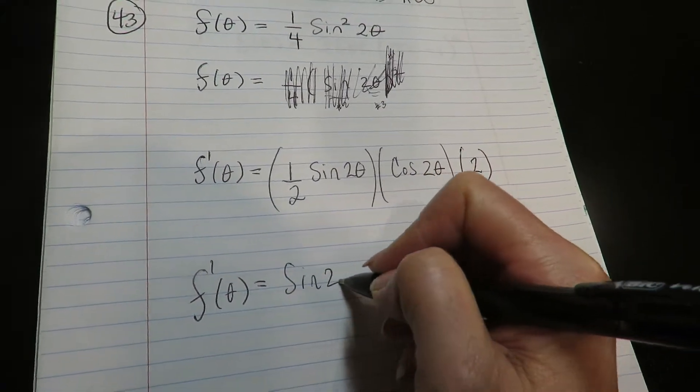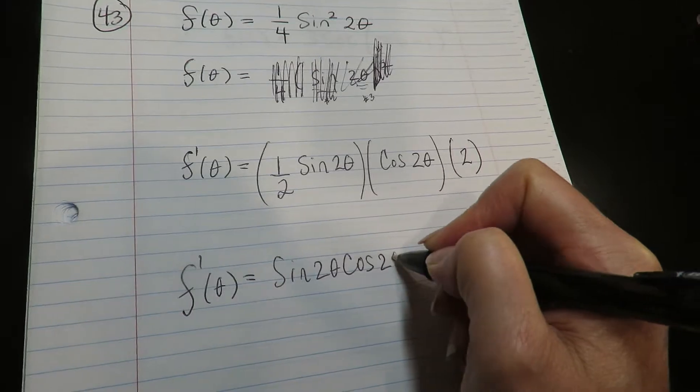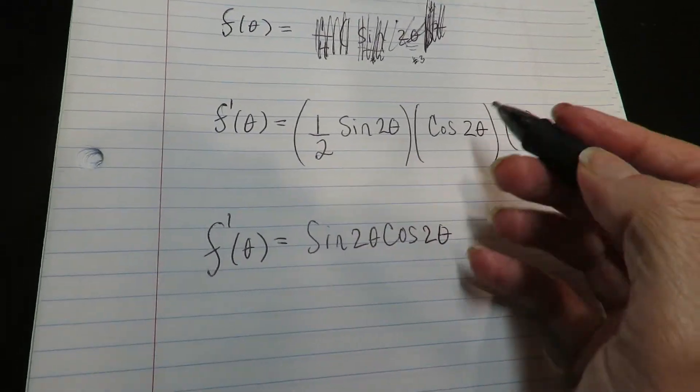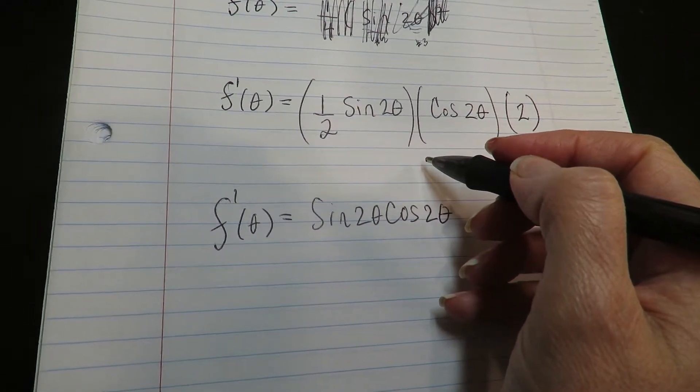So it's sine two theta, cosine two theta. I'm fine with that answer. If you guys went ahead and did the double angle, that's nice.